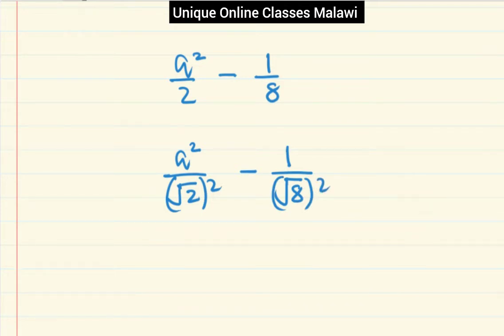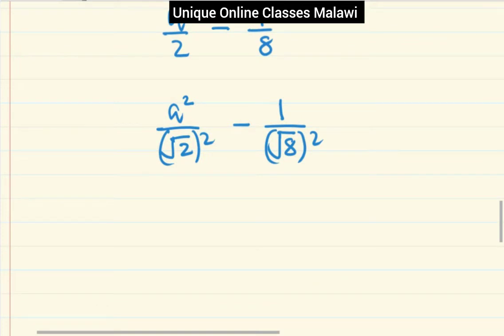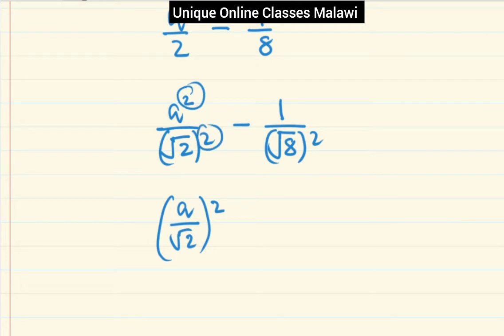Then we have the difference of two squares. You can get a over root two, then square this. It's the same thing. A squared over root two squared is a squared. Then I have minus one over root eight, then here squared.